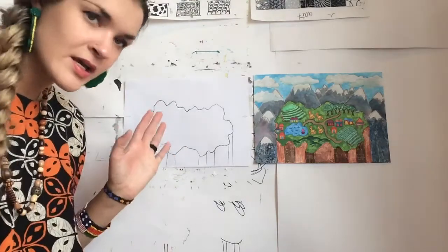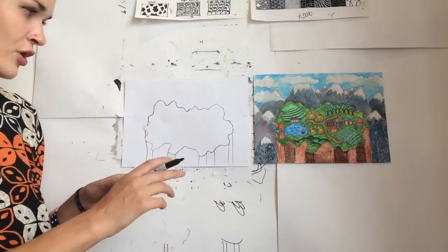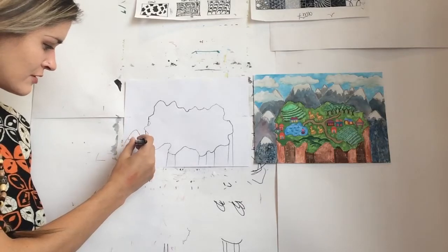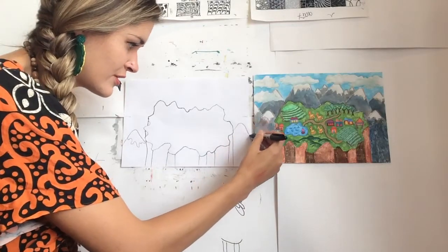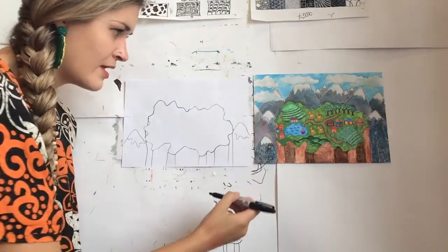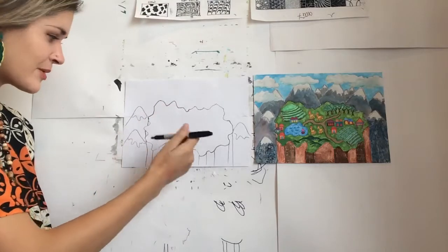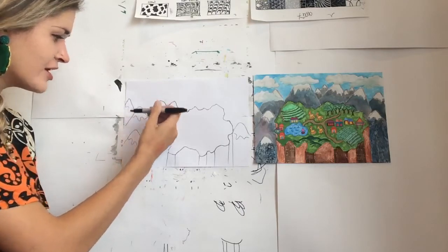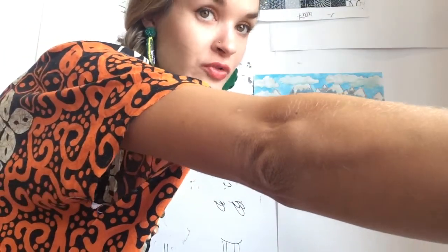So surrounding the plateau are very steep mountain peaks. I'm going to draw those in now with my marker. They would have some snow-capped mountains up there in Machu Picchu as well, so I can draw the snow caps. I'm going to keep the mountains going, adding more and more as I go. One thing that's really cool about Machu Picchu is that when you're up there the clouds actually come in around you because you're so high up. So I'm also going to sketch in some cloud shapes that are overlapping my mountains.